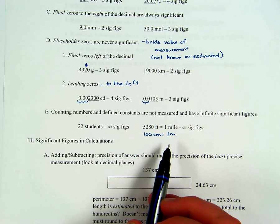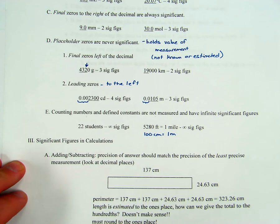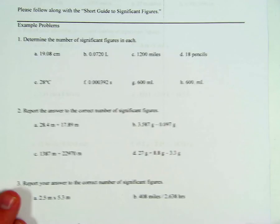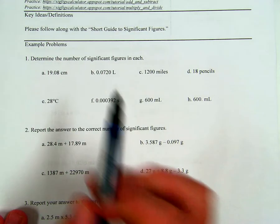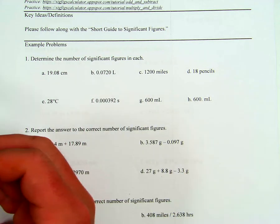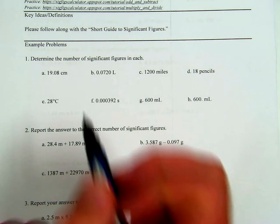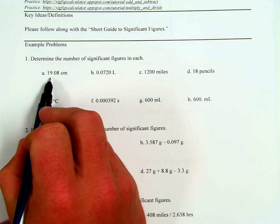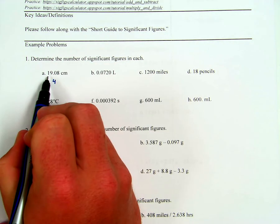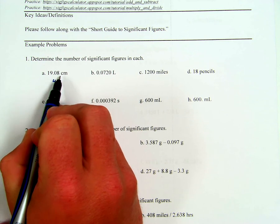Let's look at some example problems. Example problem one asks us to determine the number of significant figures in each measurement. Question A: 19.08 centimeters has four significant figures. All non-zeros are significant, and the zero between them is also significant because it's between two sig figs.